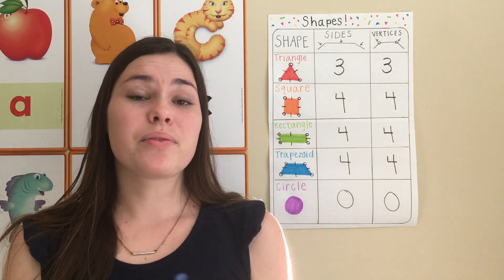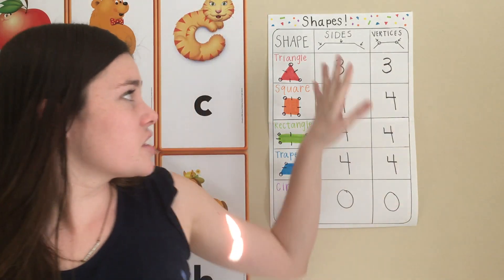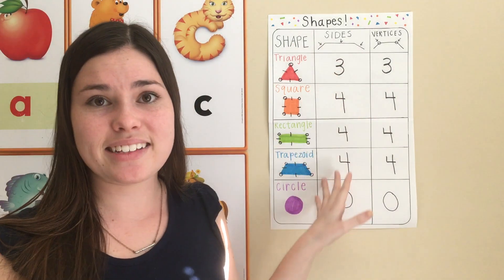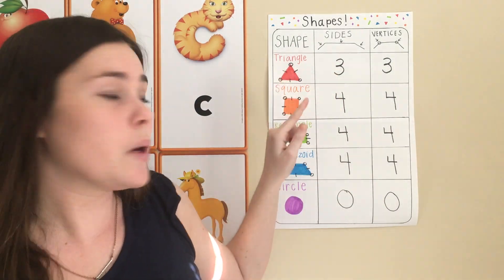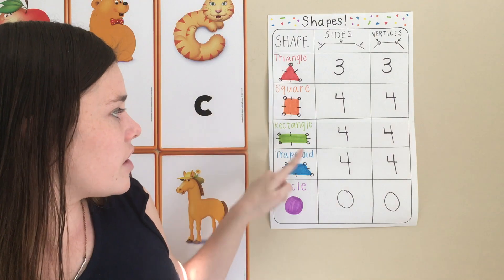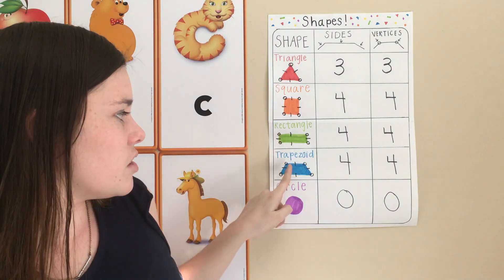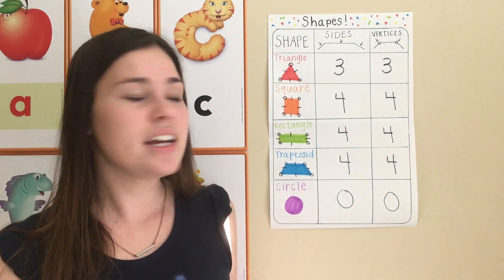Say composite. Before we jump into the new stuff, let's just review what we learned last time with our shapes. So we reviewed some of the shapes we already know, like the triangle, square, rectangle, trapezoid, and circle.